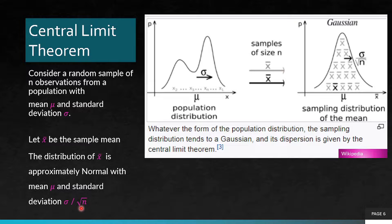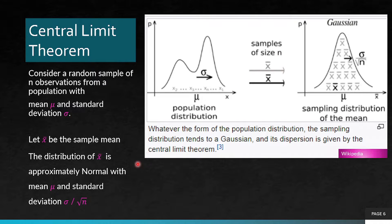This is very interesting: the population distribution can be anything — a normal distribution, an exponential distribution, a binomial distribution, any distribution. What we are doing is taking sample sizes of size n repeatedly, and what we get is that the distribution of the sample mean is normal. This is a very important result.